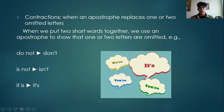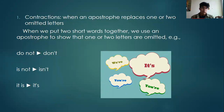Okay, the first one is contractions. When an apostrophe replaces one or two omitted letters — when we put two short words together — we use an apostrophe to show that one or two letters are omitted. For example: do not → don't, is not → isn't, it is → it's.